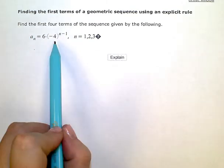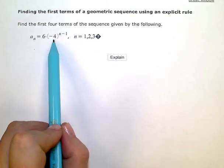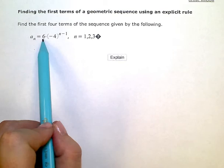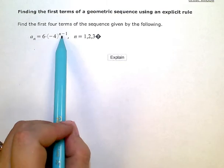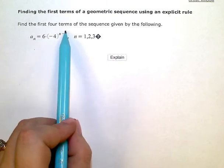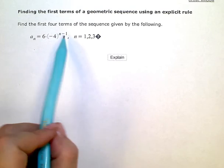Since I don't have to multiply by negative 4 to get the first term, the first term is 6. I'm going to always be multiplying it one time less than the term number I'm looking for.